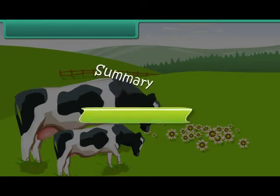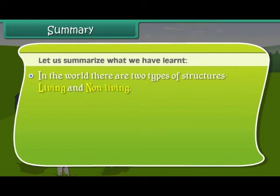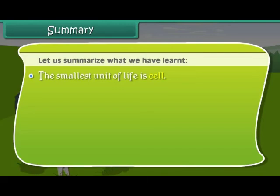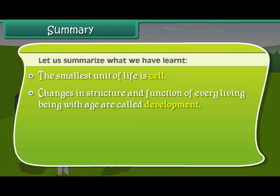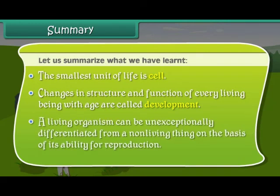Let us summarize what we have learned. In the world, there are two types of structures: living and non-living. Living beings are complex entities. All living organisms share some basic characteristics: cellular structure, use energy, grow and develop, sense and respond to change, move, give off waste, and reproduce. The smallest unit of life is the cell. Changes in structure and function of every living being with age are called development. A living organism can be unequivocally differentiated from a non-living thing on the basis of its ability for reproduction.